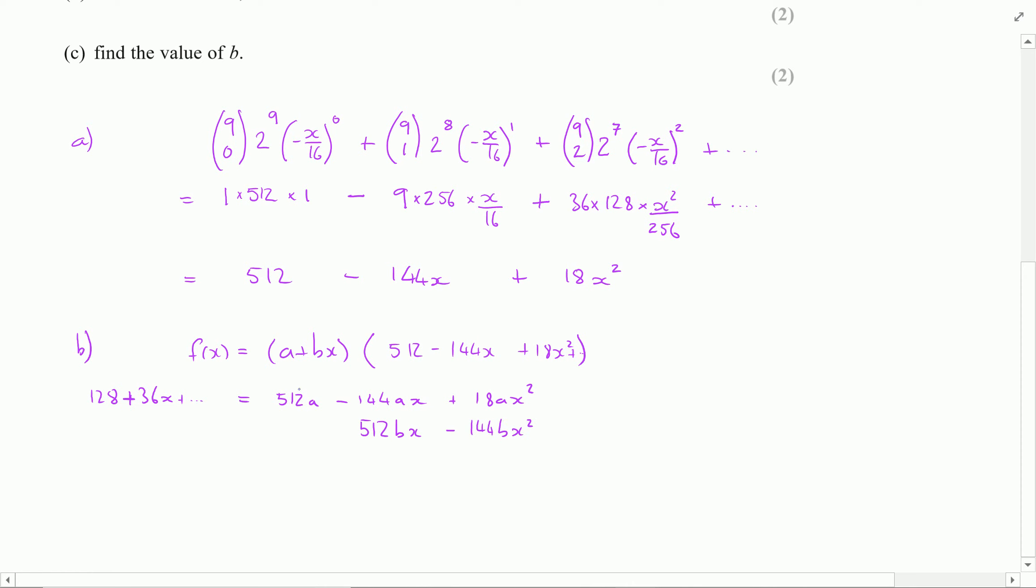Now on a separate line underneath I'm going to write down the expansion by b which is going to be 512bx and minus 144bx squared. So here I've just kept my constant terms together, my linear terms together, my quadratic terms together and so on down the line. Now actually I'm only interested in comparing the coefficients for the first two terms. So actually what I've got on the end here is not required.